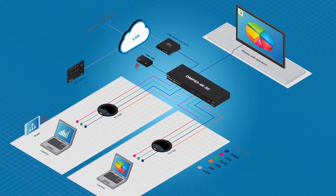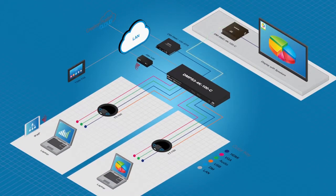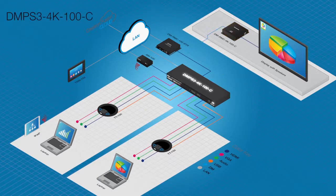If the connected sources and display are all within 30 feet of the switcher, the DM-PS3 4K50 is the right choice. If the display is further away, then go with the DM-PS3 4K100C.